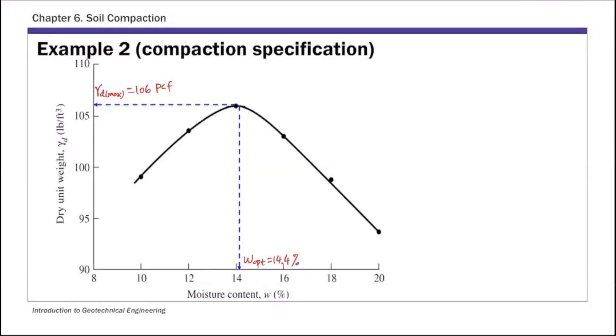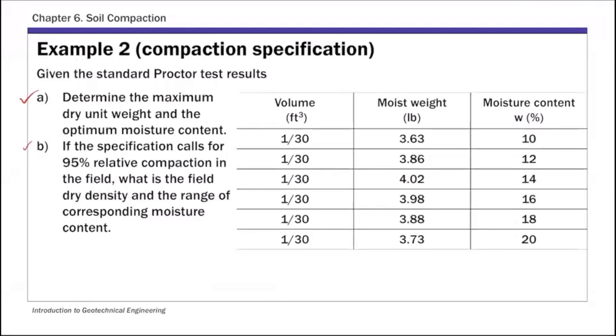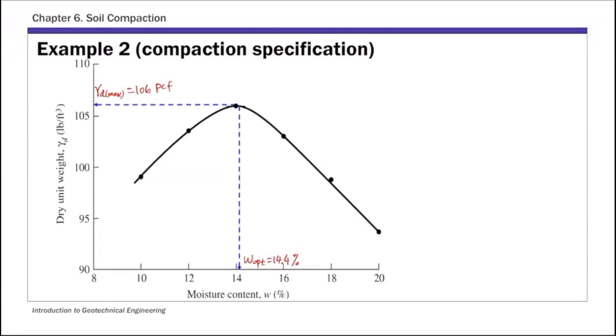And then let's look at the second part. For the second part, the specification calls for 95% relative compaction. And we are asked to find what is a field dry density unit weight and the range of corresponding moisture content. And first to get the dry unit weight, let's use the definition of relative compaction. So relative compaction, this is part B, by definition is gamma d field over gamma d max times 100%.